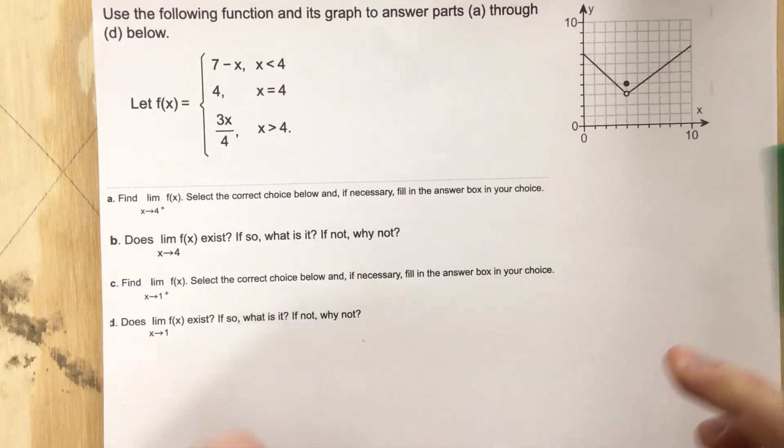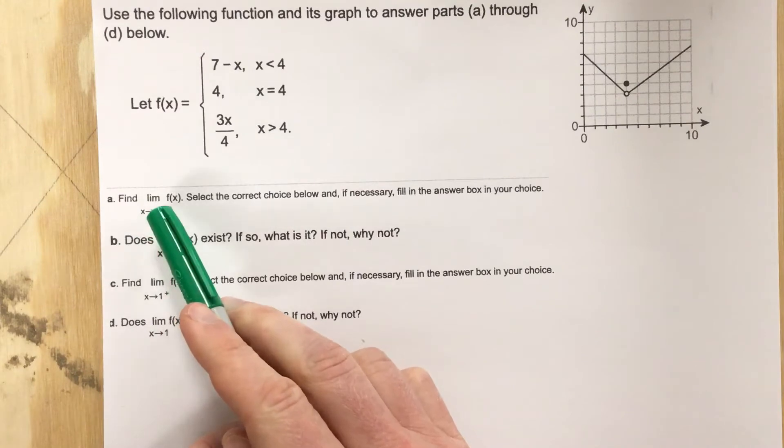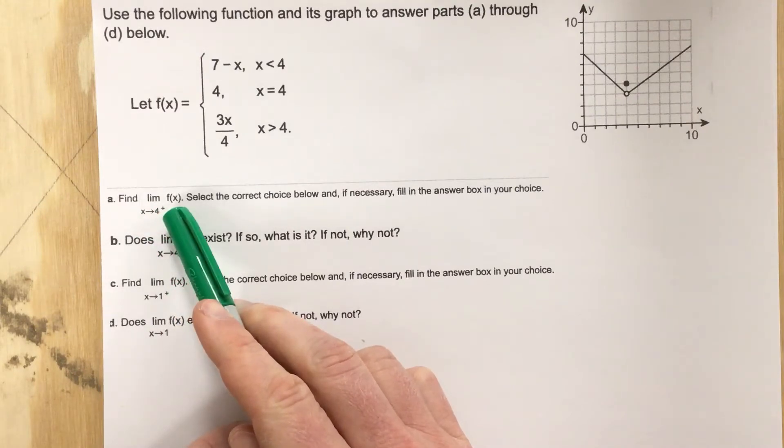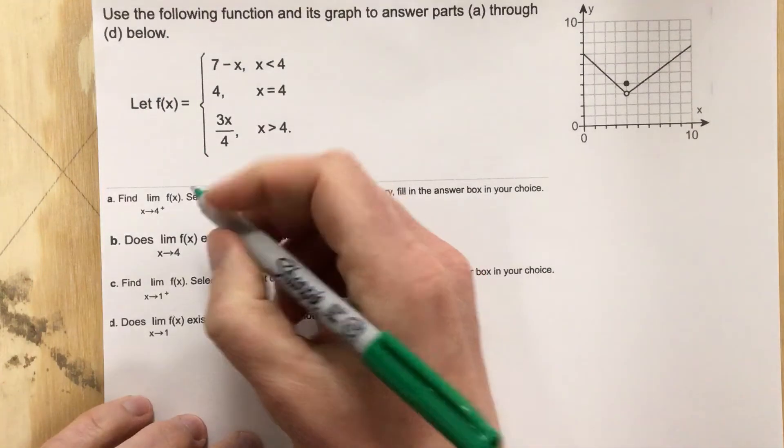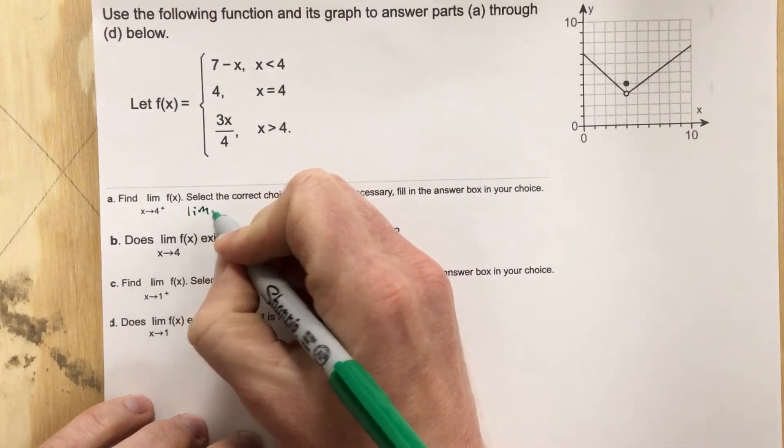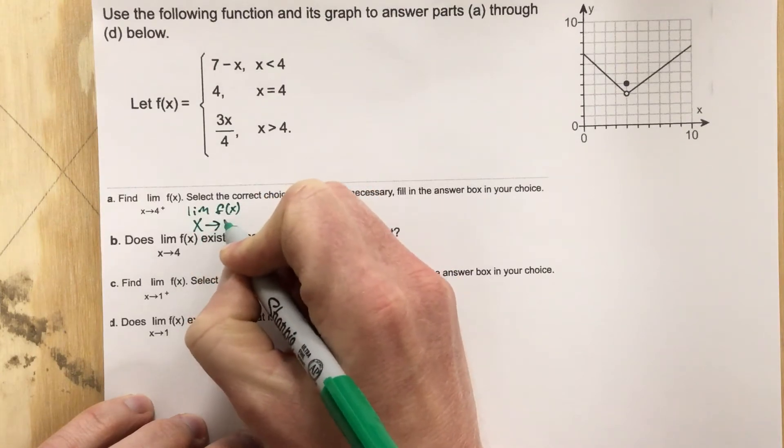So we're going to start with part a, and it says find the limit as x approaches 4 from the right of f(x). Well let's look at that. The limit of f(x) as x approaches 4 from the right.